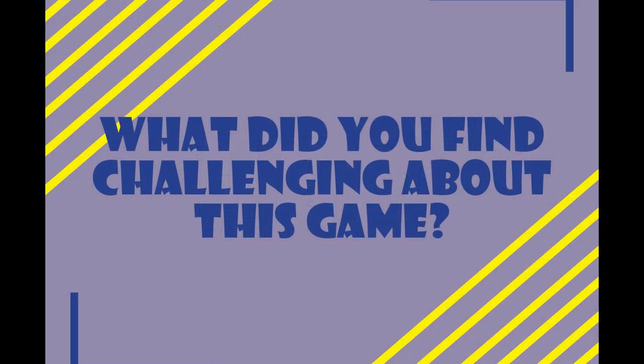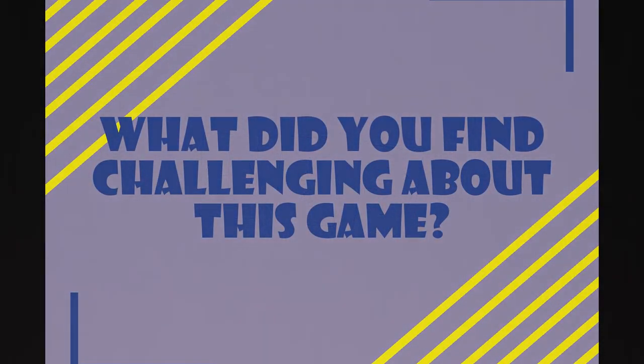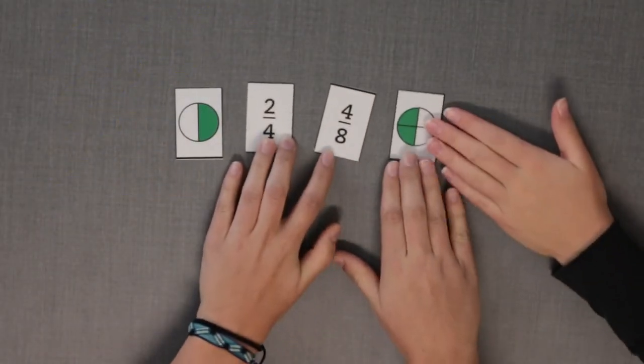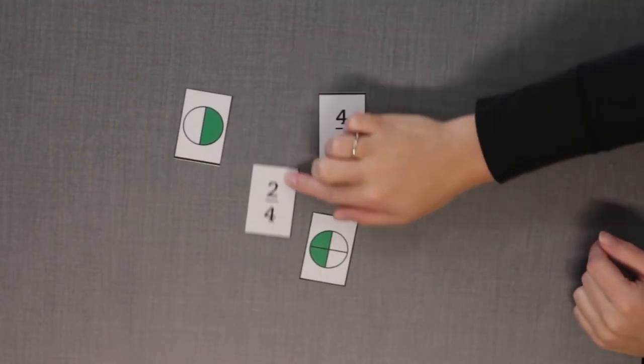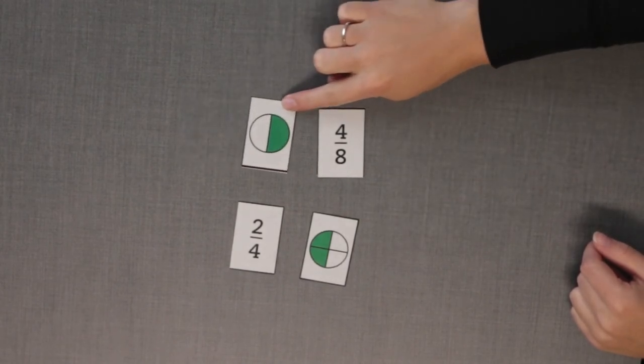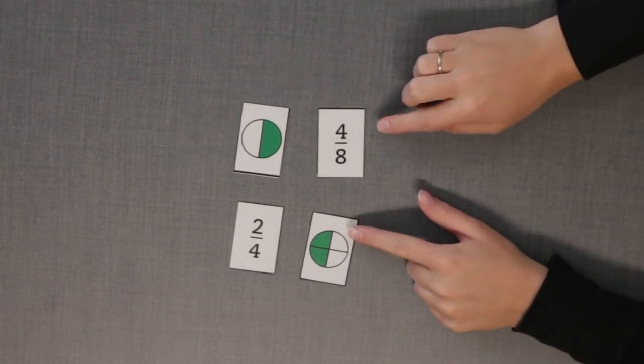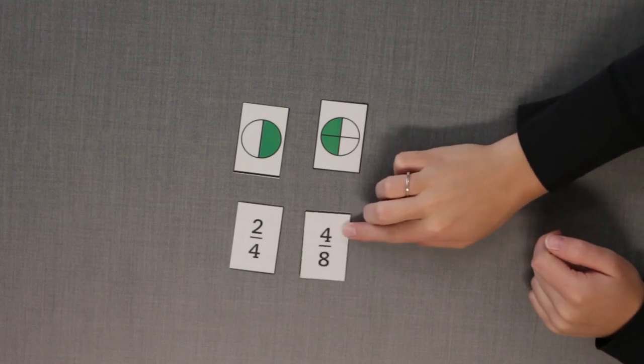What did you find challenging about this game? I found it challenging to remember what the numerical fractions looked like visually, such as one half equals four eighths, which also equals two fourths. All four of these are equivalent.